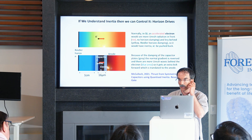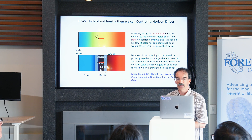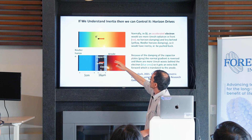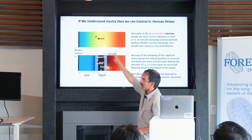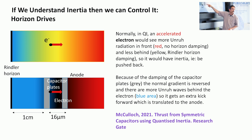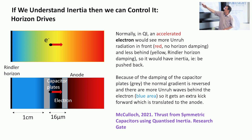So this is all very nice and astronomical, but can we use it? If we now understand inertia, we can control it — a horizon drive. In theory, an electron accelerating to the right sees more Unruh radiation on the right than the left, so it gets pushed back. If you put the electron in a capacitor, or any structure that damps the Unruh waves, there'll be a null zone with very little Unruh radiation in front, and more behind it. So it'll be accelerated forward in a new, quantum way, and that will push the capacitor when it hits the anode.